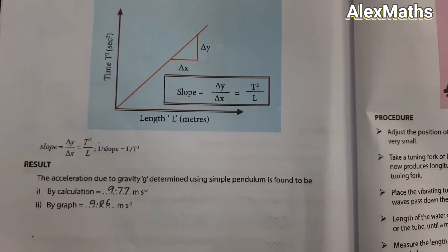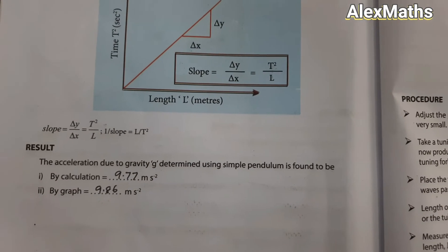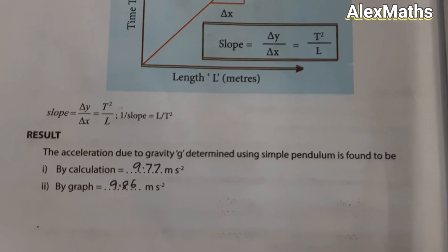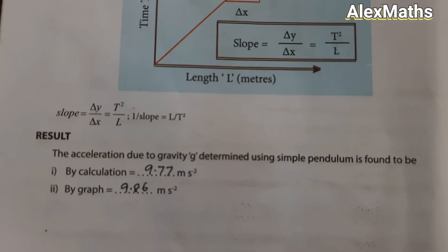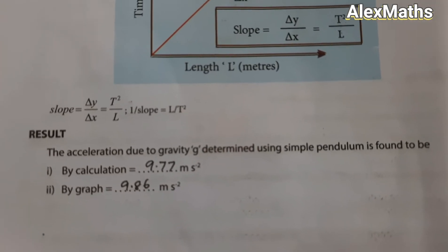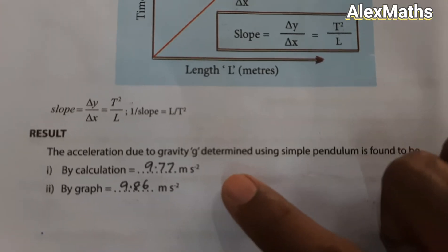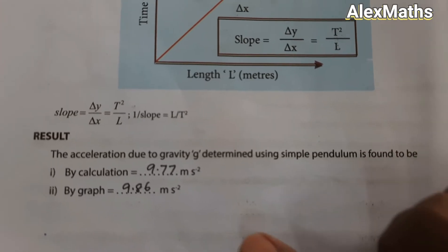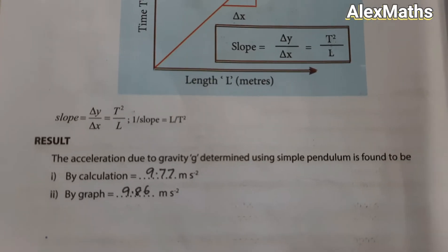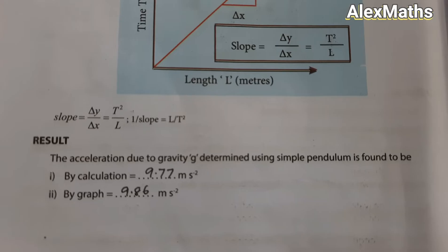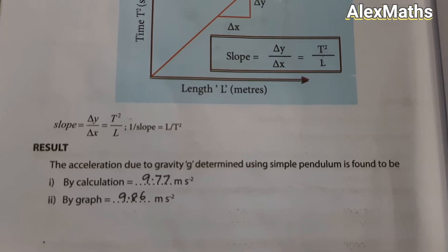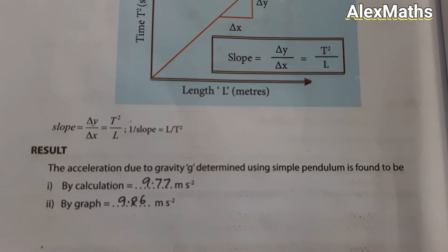Finally, write the result. The acceleration due to gravity has been determined using the simple pendulum. By the calculation method, g = 9.77 m/s²; by the graphical method, g = 9.86 m/s².